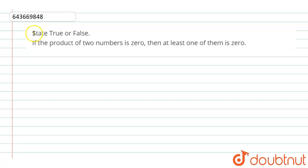Hello everyone, look at the question we have given. State true or false: If the product of two numbers is zero, then at least one of them is zero.